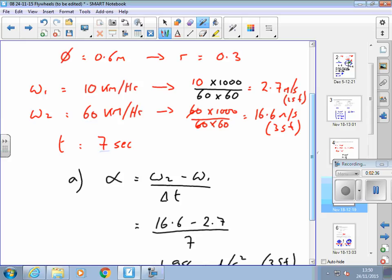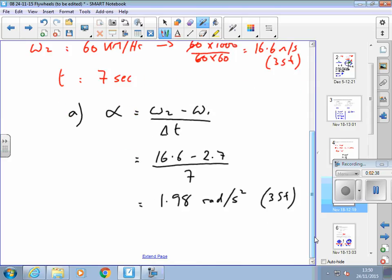So, our answer, we might consider, could only be accurate to maybe one significant figure. So, there is an argument for rounding that to two radians per second squared to one significant figure.